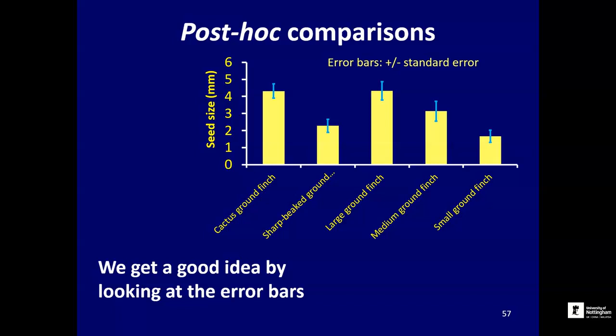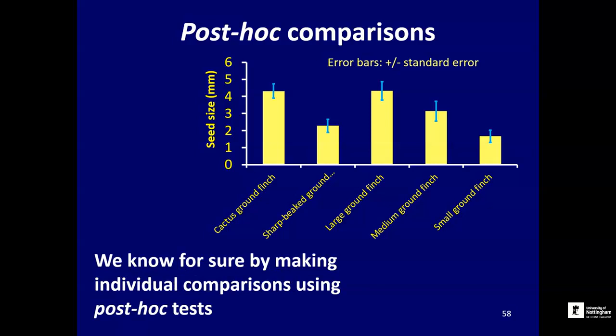Plotting the graph is actually a really good start, and especially if you've got reliable error bars, then by looking for overlap between them we get a very good idea of whether those differences are significant. Sometimes it's enough just to show the graph and describe the data — we could say we've got a couple of species eating very big seeds, a couple eating small seeds, and one in the middle. But if you really did need to know whether the medium ground finch was specifically different from the large or the small, you could do something called a post-hoc test — because post-hoc means after the fact. We've done the main analysis, and after that, post-hoc, we want to make some comparisons. These are called post-hoc comparisons and you make them using post-hoc tests.